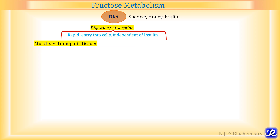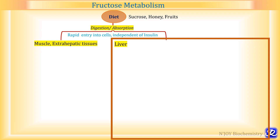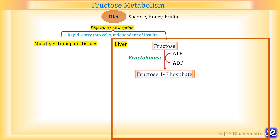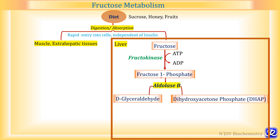Now let's see how fructose is metabolized in liver, kidney and intestine. This is a schematic representation of a liver cell. Fructose enters the hepatocytes and is converted into fructose 1-phosphate by the enzyme fructokinase — the phosphate group is donated by ATP, which is converted to ADP. This fructose 1-phosphate is then acted upon by the enzyme aldolase B, which is different from the aldolase A of glycolysis. Aldolase B converts fructose 1-phosphate into glyceraldehyde and dihydroxyacetone phosphate — these are the two molecules formed.